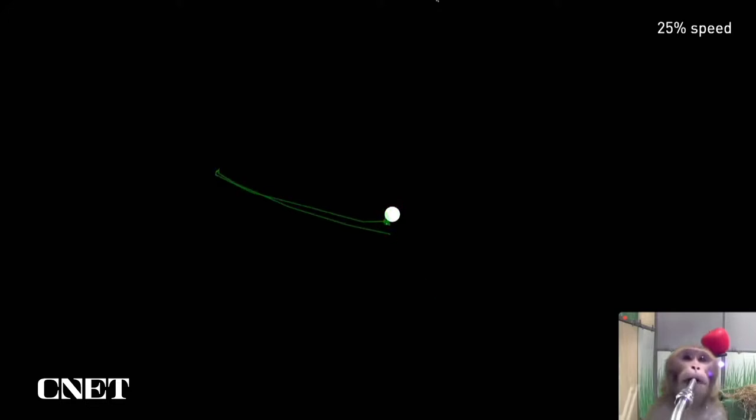But here we stimulate, and he makes the same saccade to the same location, because we stimulated the same electrode. Nothing appears on the screen at that time, and he has no other cue to make that eye movement. Let me show you this in real time.